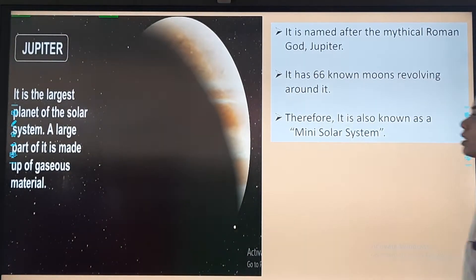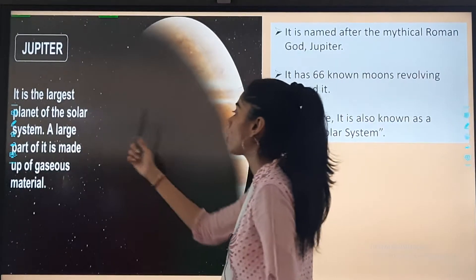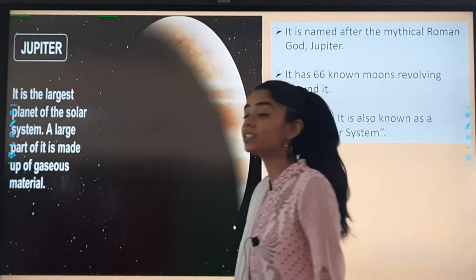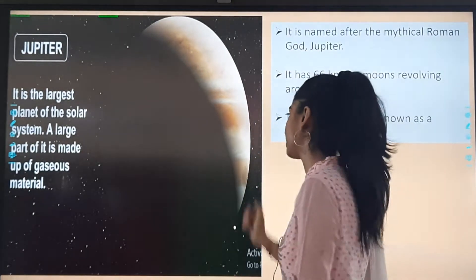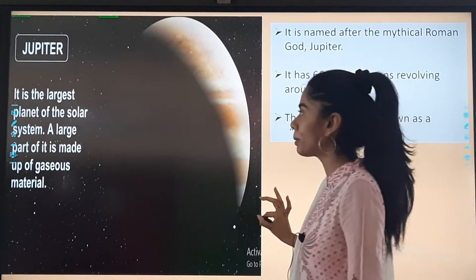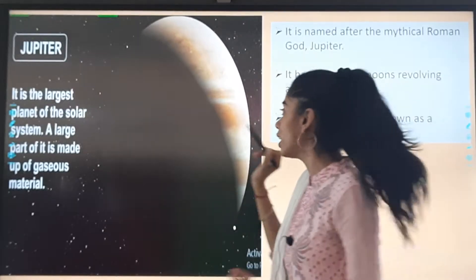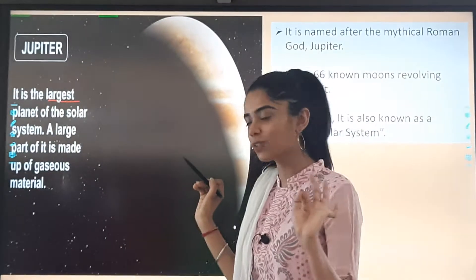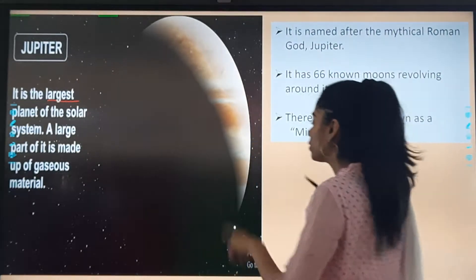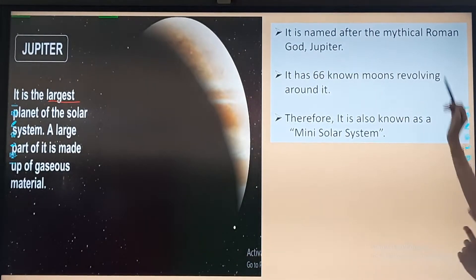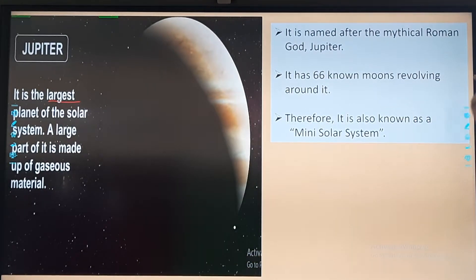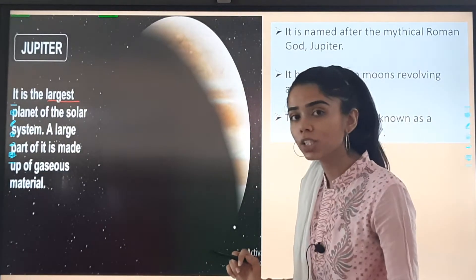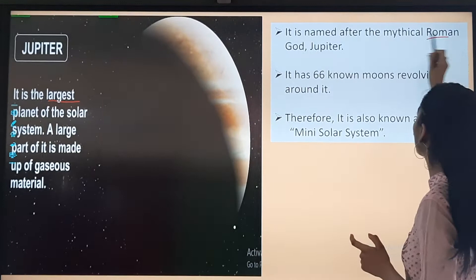Jupiter is the largest planet of the solar system. A large part of it is made up of gaseous material. It is named after the mythical Roman god, Jupiter.